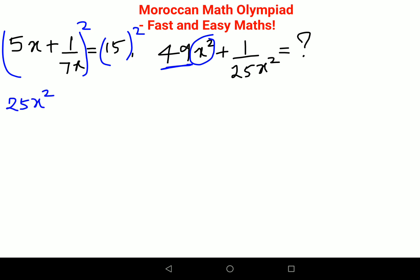So 5x squared gets you 25x square plus 1 upon 49x square plus 2 into 5x into 1 upon 7x equals to 225. Okay, so this is cancelling.